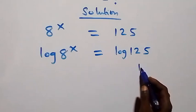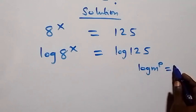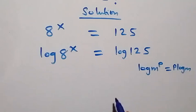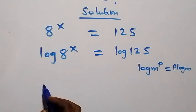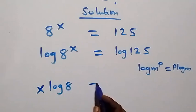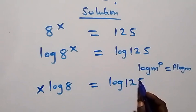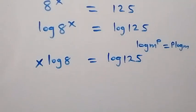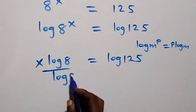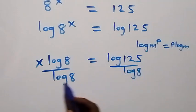We apply the power rule of logarithms: log m raised to power p equals p·log m. Here the power is x, so we have x·log 8 equals log 125. The next step is to divide both sides by log 8.